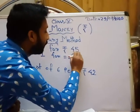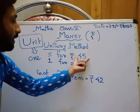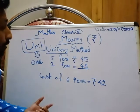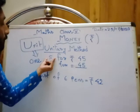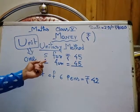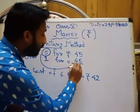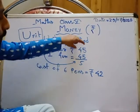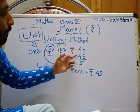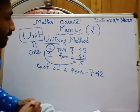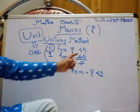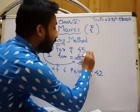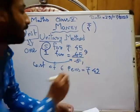We write the total money — 45 rupees — as the numerator, the upper portion of the fraction. Then we write 5 as the denominator. Since 5 and 45 are both divisible by 5, we simplify: 5 divided by 5 is 1, and 45 divided by 5 is 9.